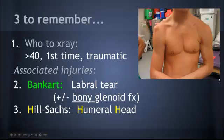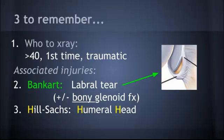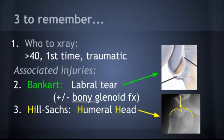Three things to remember from this talk: First, who needs an X-ray — patients over 40 years old, first-time dislocations, traumatic mechanism, or anything concerning on exam. Second, the associated injuries: Bankart usually refers to the labral tear present in 90% of dislocations, but on X-ray we're looking for the bony glenoid rim fracture — the bony Bankart lesion. Third, the Hill-Sachs, which is the posterior lateral humeral head cortical depression fracture that occurs as the shoulder dislocates anteriorly.